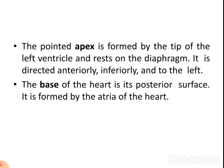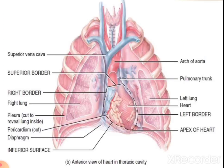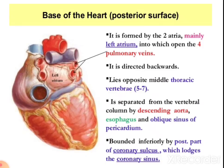The apex of the heart is formed by the tip of the left ventricle and rests on the diaphragm, directed anteriorly, inferiorly, and to the left. The base of the heart is its posterior surface, formed by the left atrium. In the left atrium there is the opening of four pulmonary veins as shown in the diagram. It is directed backwards and lies opposite to the 5th to 7th thoracic vertebrae.